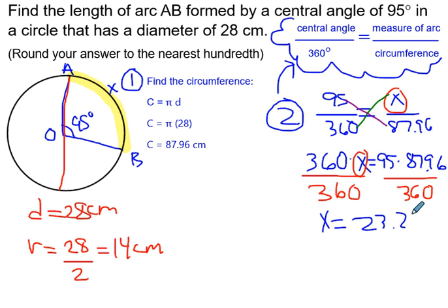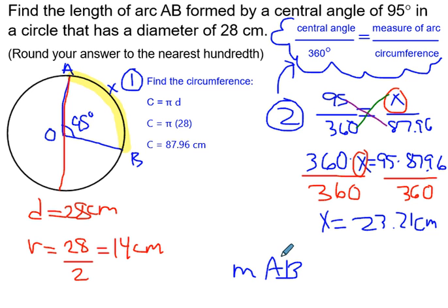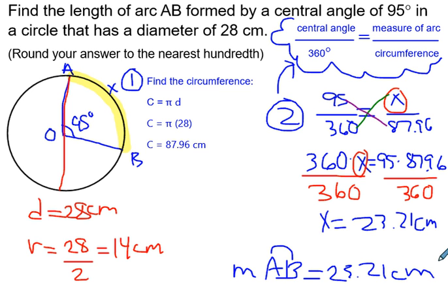The answer is 23.21 centimeters. We can write it like this: the measure of arc AB equals 23.21 centimeters. That's your answer.